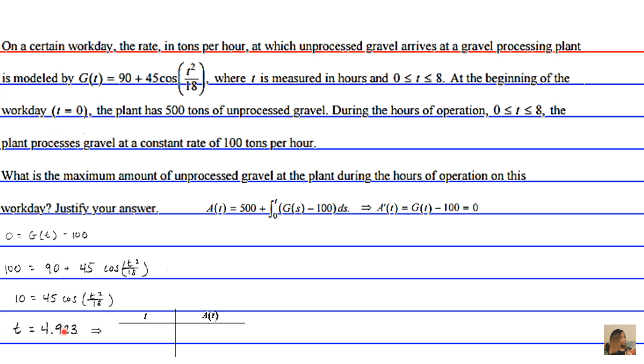So we set up a little table. We know that our accumulation function at t = 0, we get that our accumulation is 500—nothing has come in or gone out yet. Then, when we integrate this at 4.923 seconds, we get approximately 635 tons of accumulation.